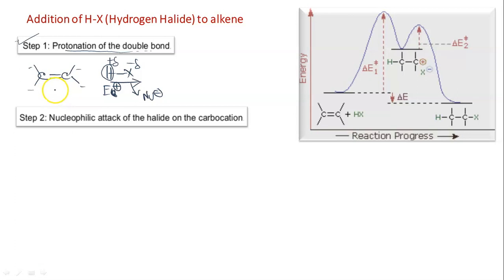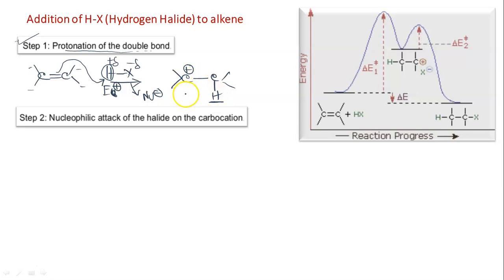Since there is protonation, the CC double bond will act as nucleophile. It will capture this H and there will be CH bond formation and positive charge on this carbon. Depending on the nature of the groups, H may be added to the right-hand side carbon or the left-hand side carbon - it depends on which carbon will be more stable. That will be discussed in a separate video. This is the first step, and remember, this is the RDS - the rate determining step. It is a slow step and requires very high activation energy. This reaction is endothermic.